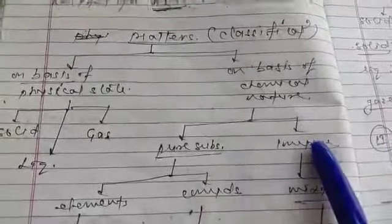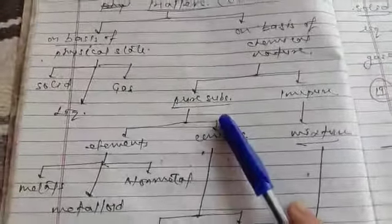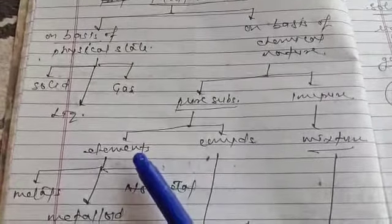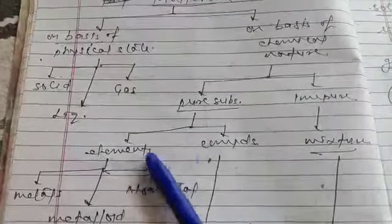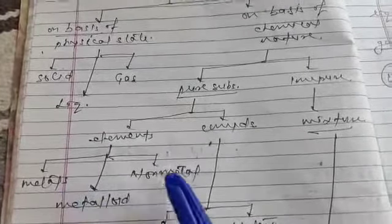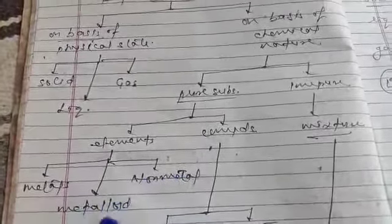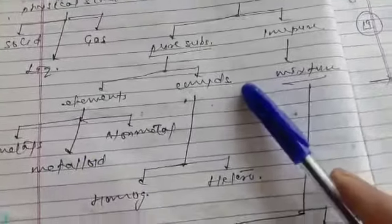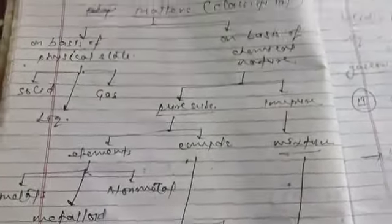Pure substances - we are going to study either elements or compounds. Elements may be metals, non-metals, and intermediate, called metalloids. Compounds are homogeneous or heterogeneous.